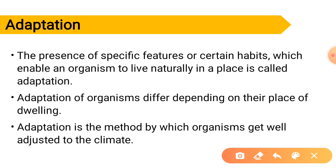You can see the definition on your screen. Adaptation of organisms differs depending on the place of dwelling. So if an organism stays in a hot climatic condition, it will have a different set of adaptations compared to one which lives in cold areas. That's why a fish cannot live out of water and a camel cannot live in the sea.